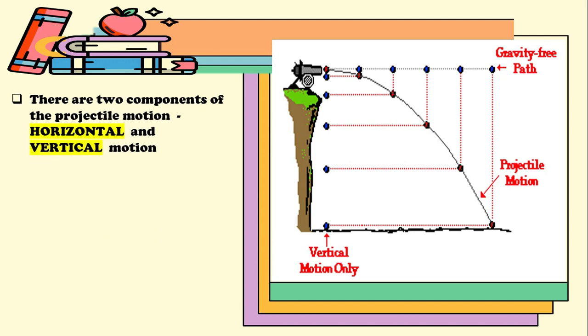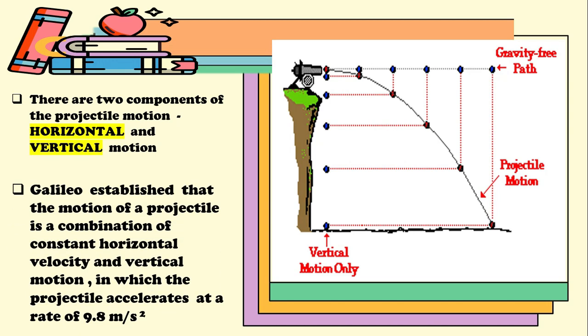There are two components of projectile motion, the horizontal and vertical motion. Galileo established that the motion of a projectile is a combination of constant horizontal velocity and vertical motion, in which the projectile accelerates at a rate of 9.8 meter per second squared.